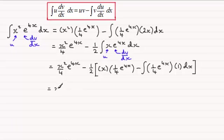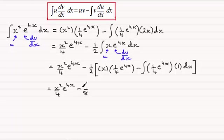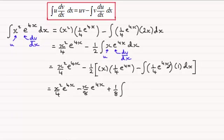Next, tidy this up by multiplying through by the constant out the front. Minus a half times a quarter gives minus 1/8. So we have minus x over 8 times e to the power 4x — that saves space. Then minus a half times minus the integral gives a positive value, and the half times the quarter gives 1/8. Pull 1/8 out the front of the integral sign, leaving just the integral of e to the power 4x.